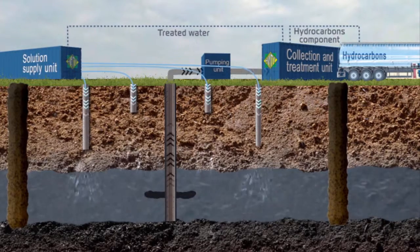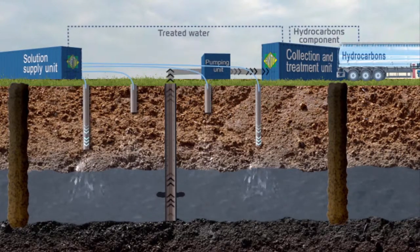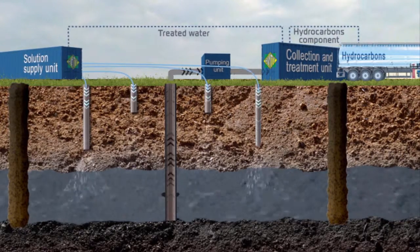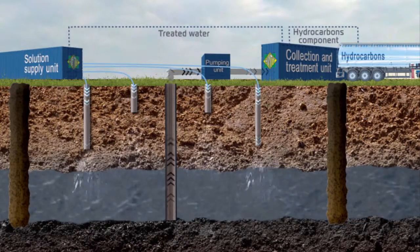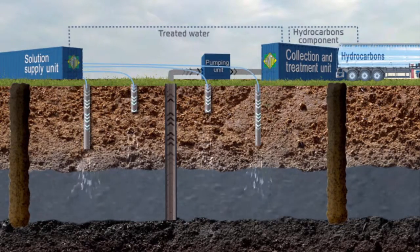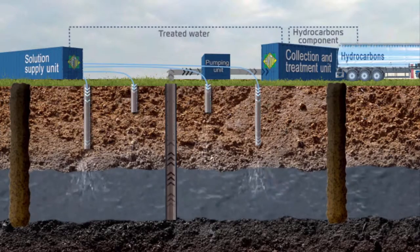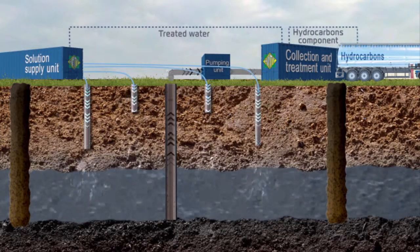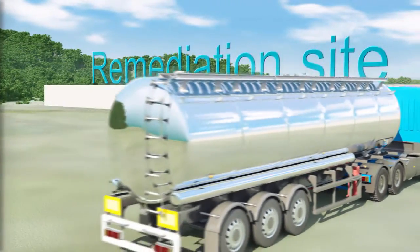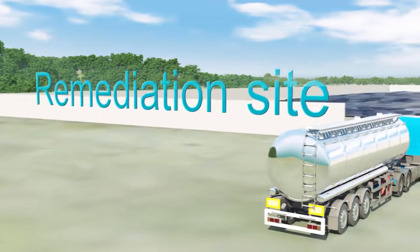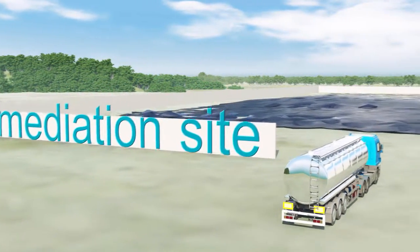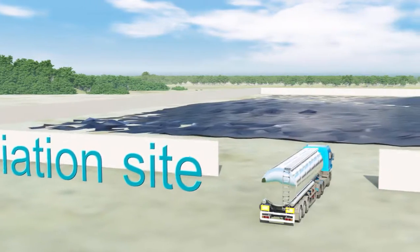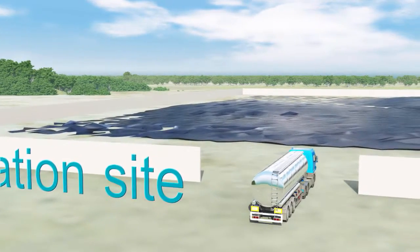The forced expulsion of the washed-out contamination to the well for lowering the water table and pumping out then occurs. The continuity of the process enables cleaning of the soil throughout the contamination from the top to the bottom layer. The polluted washing solution is delivered into purification equipment, and after being purified, the solution is recycled through the well system. The separated oil film is transported to a specially prepared site.